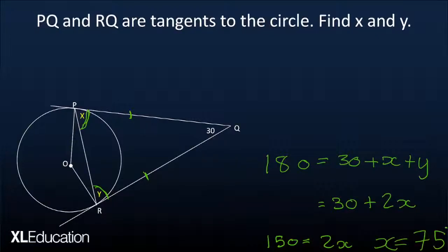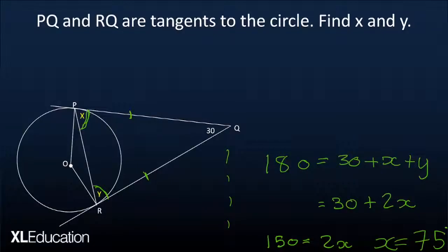Perfect. Now we've already seen that y equals 75 degrees as well because we've seen that x and y equal the same angle. However, we have to state that explicitly because at the moment we've just answered half of the question. So it's very important for us to also write that y equals 75 degrees.